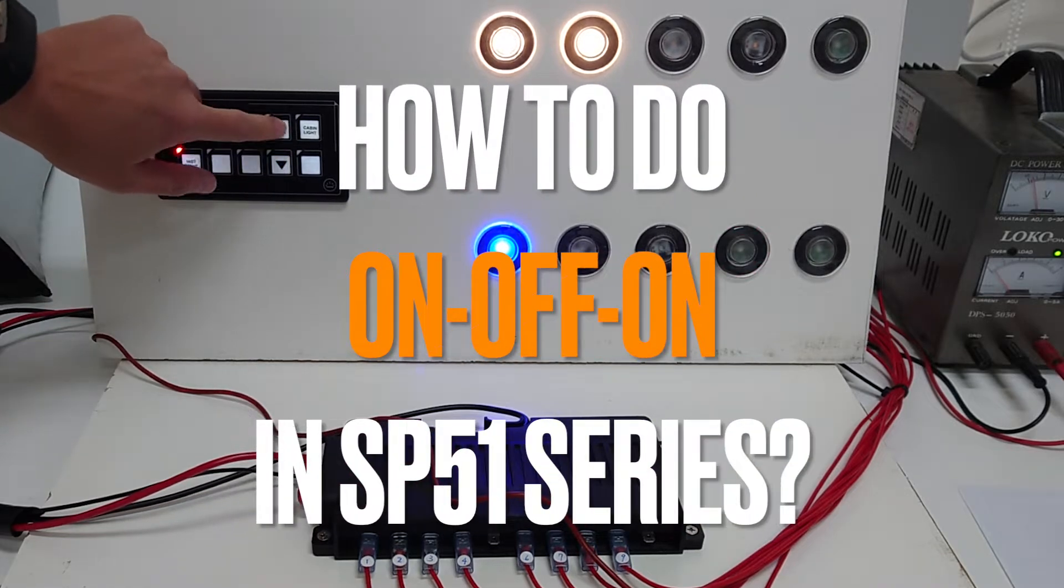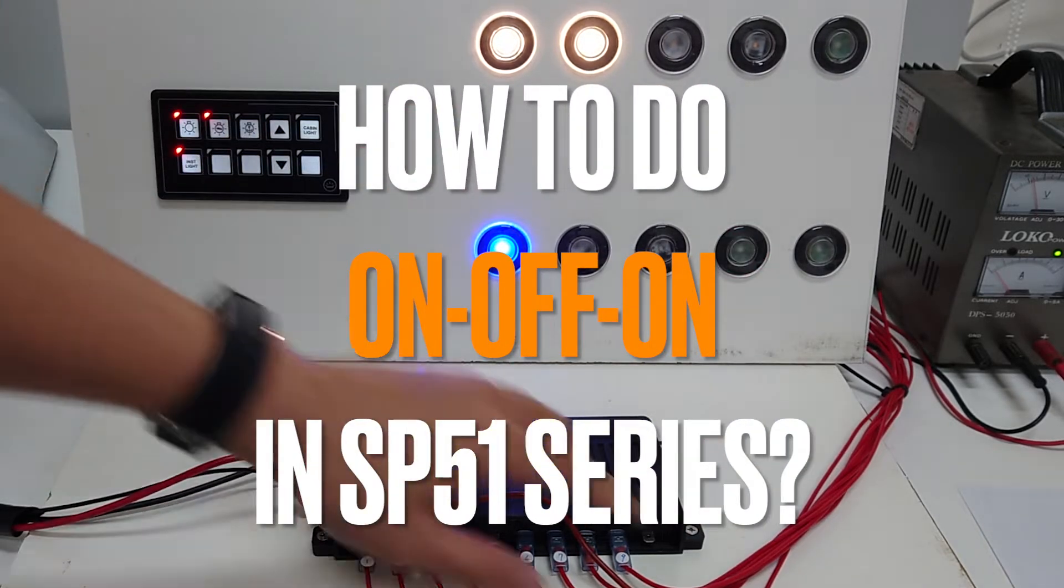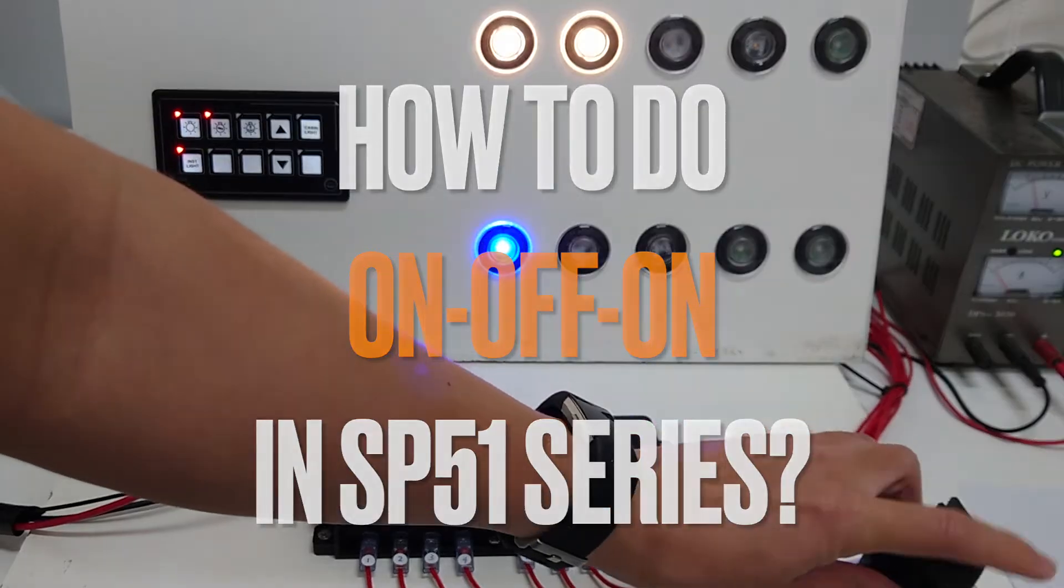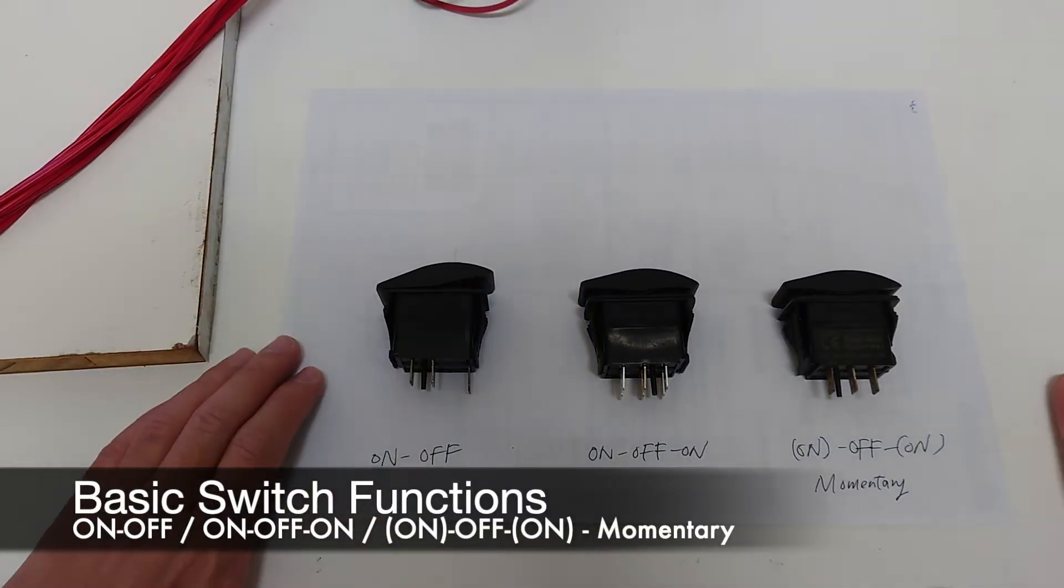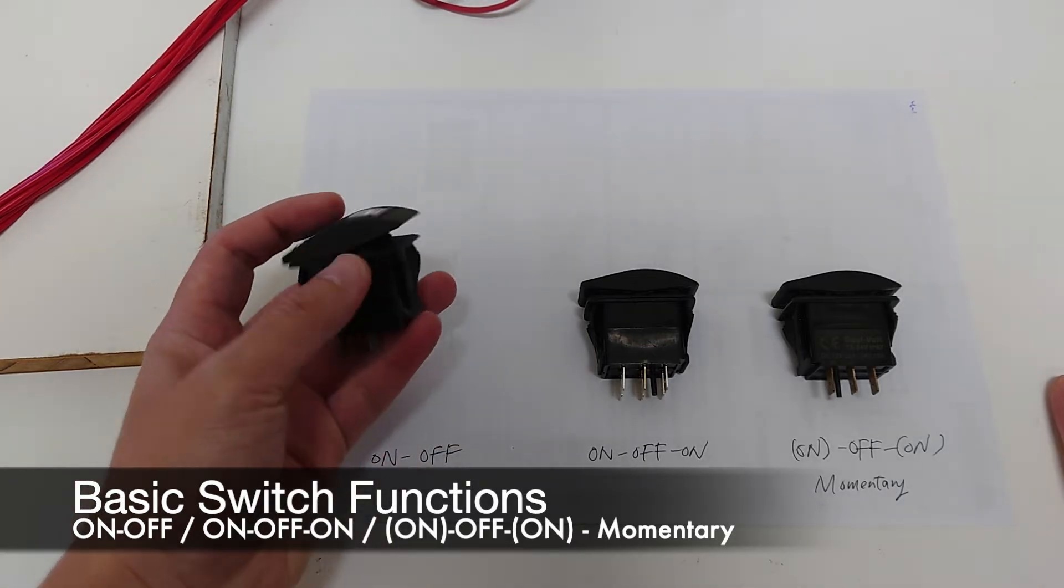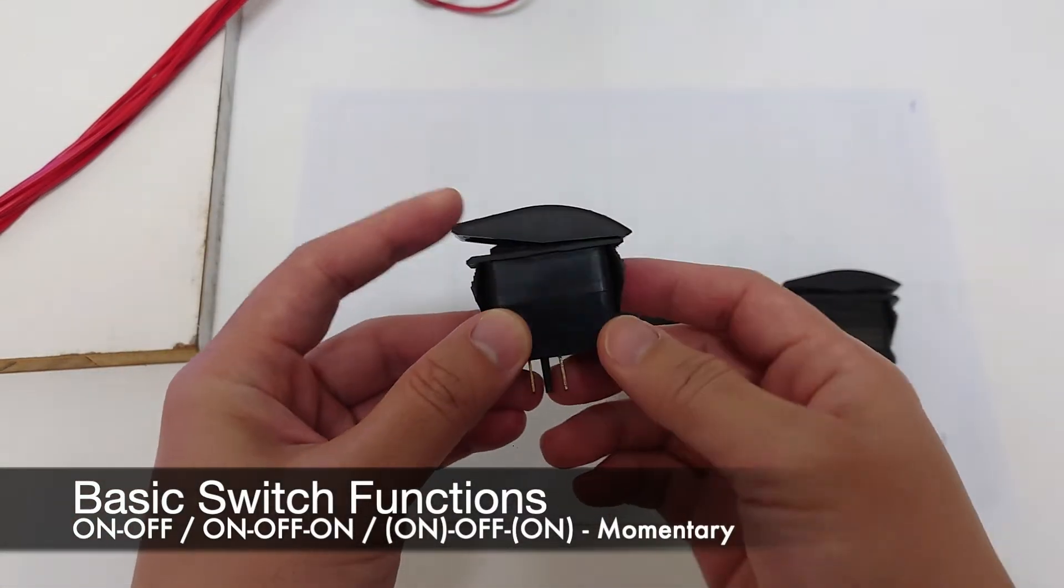So how do we realize an on-off-on switch or on-off-on momentary switch in a membrane touch panel? There are three different types of switches here. The first one is an on-off switch - you press here and it's on, here is off.